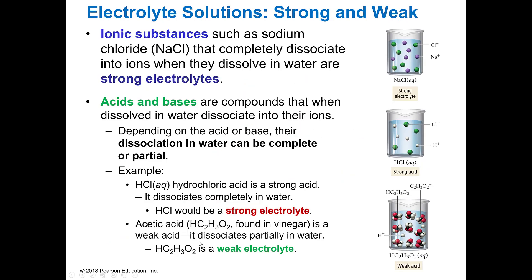Ionic substances are going to be strong electrolytes — sodium chloride, calcium chloride, things like that. Acids and bases: if it's a strong acid, it's going to be a strong electrolyte; if it's a weak acid, it's going to be a weak electrolyte. Acetic acid, for example, is a weak acid, so it's a weak electrolyte. Hydrochloric, sulfuric, nitric — the strong acids you remember — will all be strong electrolytes.